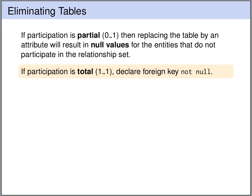If the participation is partial, so if you have a many to zero-or-one relationship set, then in this extra column that we add, we will get null values for those entities that do not participate in the relationship set. If the participation is total, so if this is a many to one relationship set, then we should declare this foreign key as not null.